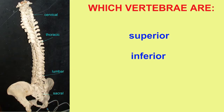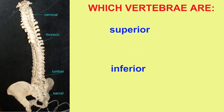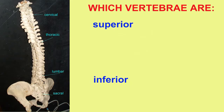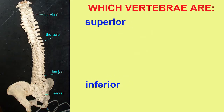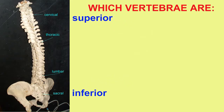Here in the vertebral column, there are different types of vertebrae. The cervical vertebrae would be on the superior end of the vertebral column, while the lumbar vertebrae and the sacrum and coccyx would be at the inferior end.